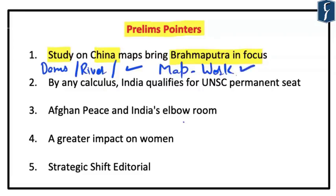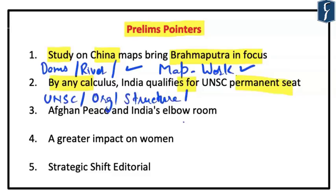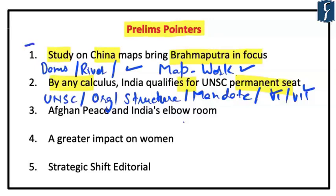The second important article is about India qualifying for a permanent UNSC seat. This topic is very important for knowing what the UNSC is, its organization, structure, and mandate. You should also know Chapter 6 and Chapter 7, which deal with establishing peace and security at the global level. Articles one and two are more important from the perspective of prelims, while articles three and four are more important from the perspective of mains.